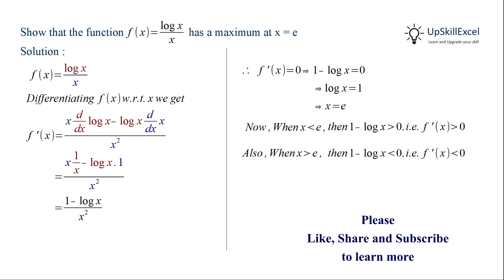So here f prime x is positive and then it becomes negative. That means the function has a maxima at x is equal to e.